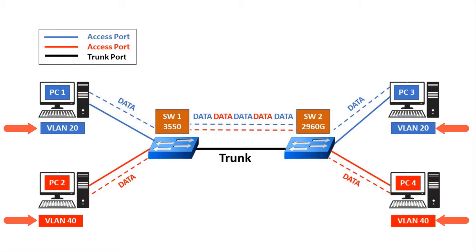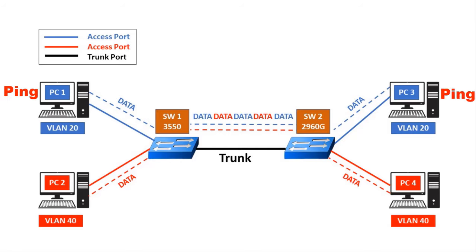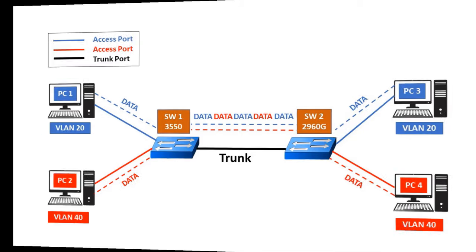VLAN 20 and VLAN 40 are already configured on the 3550 and 2960 switches for testing purposes, and PCs are already connected to each VLAN. In this video I will create a trunk link between the Cisco 3550 and 2960 switches and show you that I can ping from PC1 to PC3 via the trunk link. So let's start.